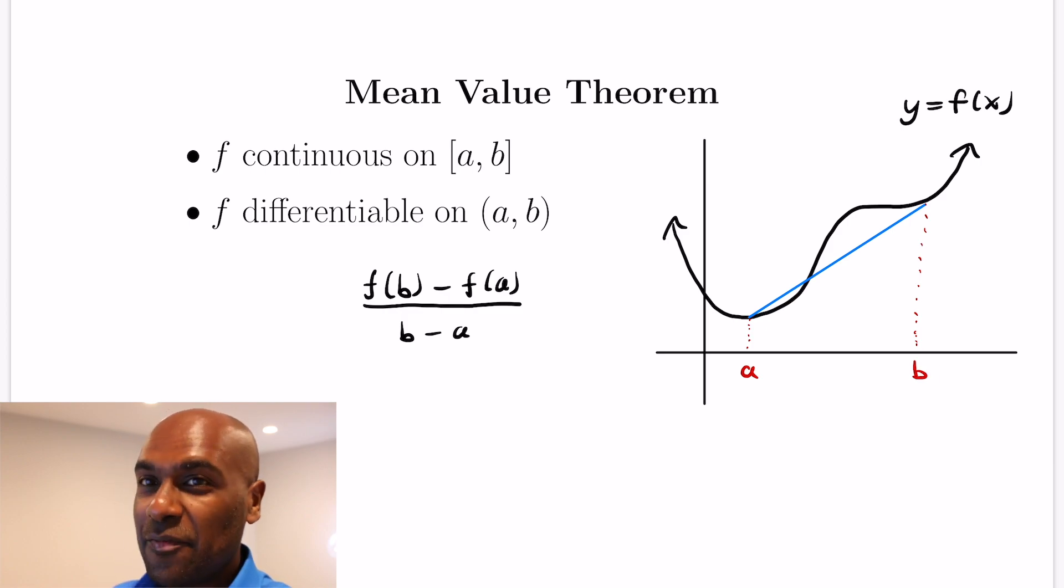...that slope being (f(b) - f(a))/(b - a), that's actually going to equal the slope of the tangent to the curve at some point c in between a and b, so in the open interval (a,b).